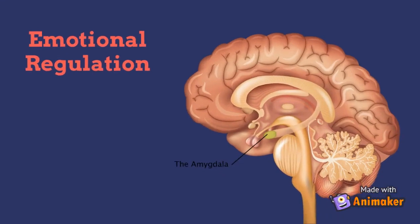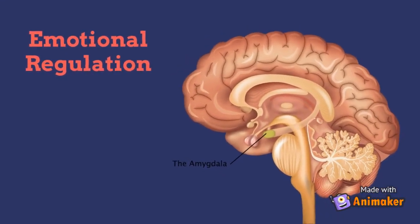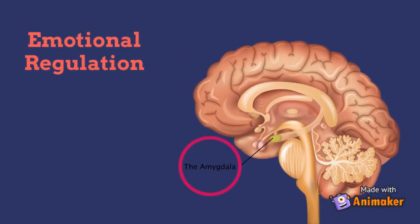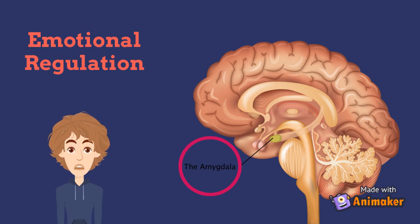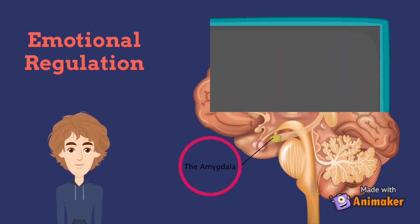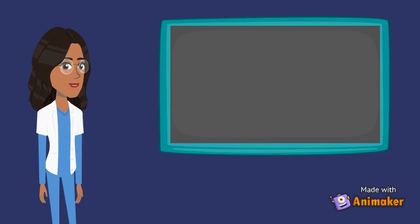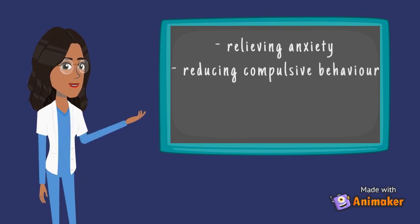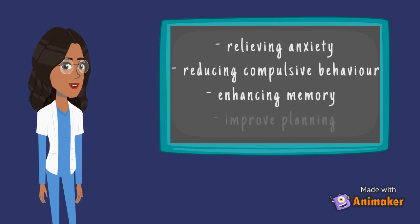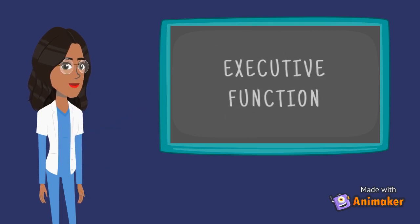Exercise also has a positive effect on the limbic system because it helps regulate the amygdala. In the context of ADHD, the amygdala regulates the fight-or-flight response, which produces feelings of stress and anxiety. Increasing levels of neurotransmitters in this region will help kids regulate their emotions and reduce impulsivity and volatility. Incorporating fitness goals into your daily routine can also relieve stress or anxiety, reduce compulsive behavior, enhance your memory, and improve your skills of planning and organizing, known as executive function.